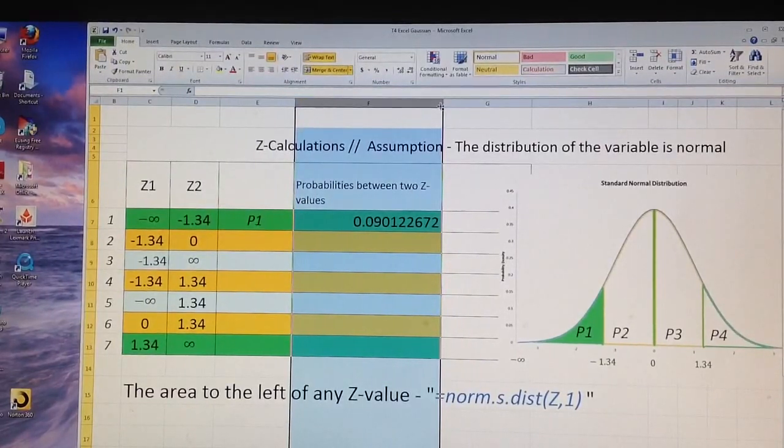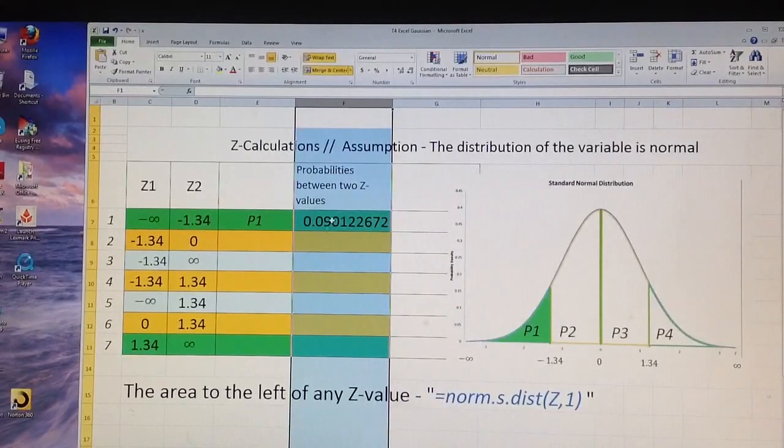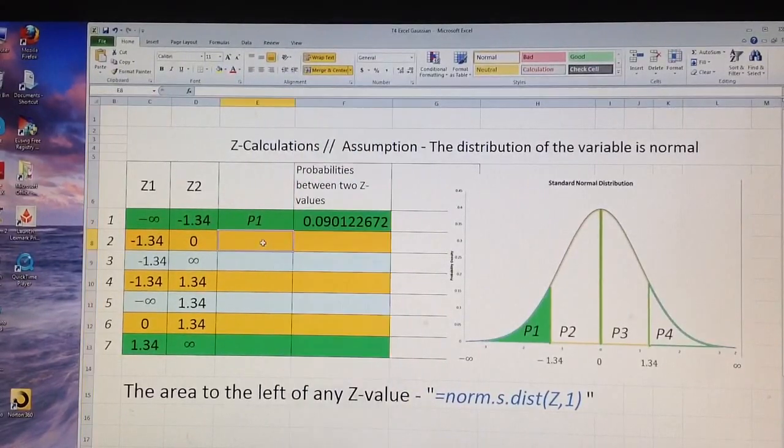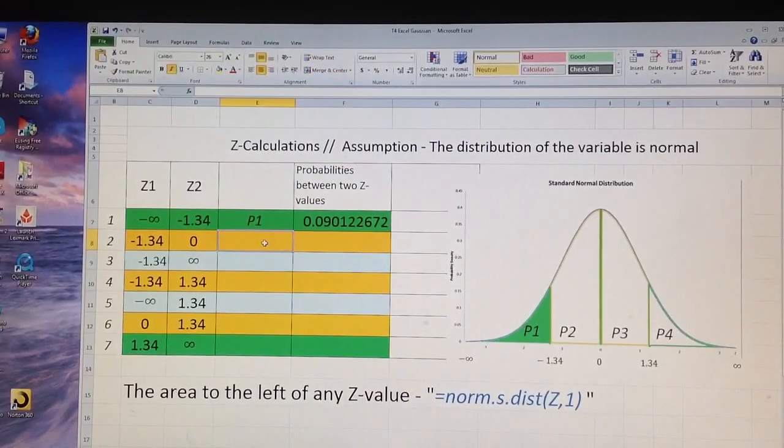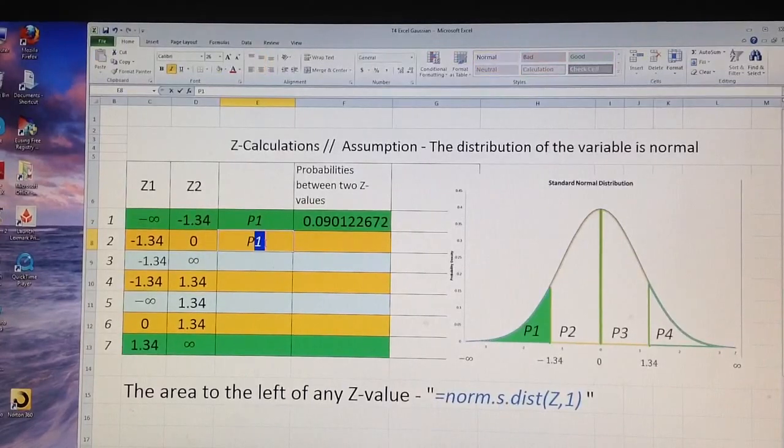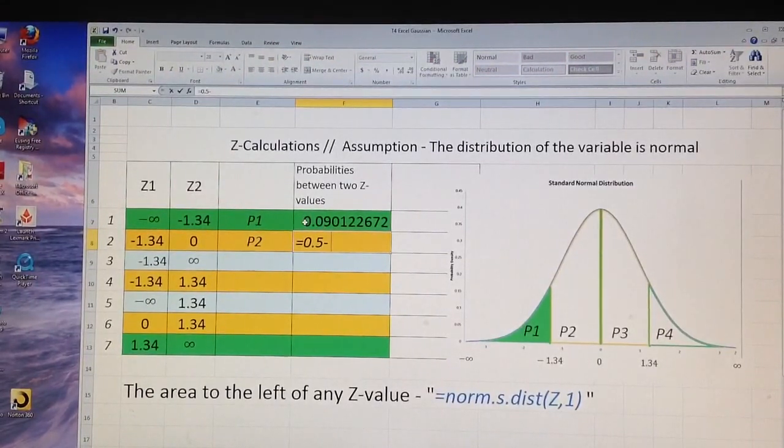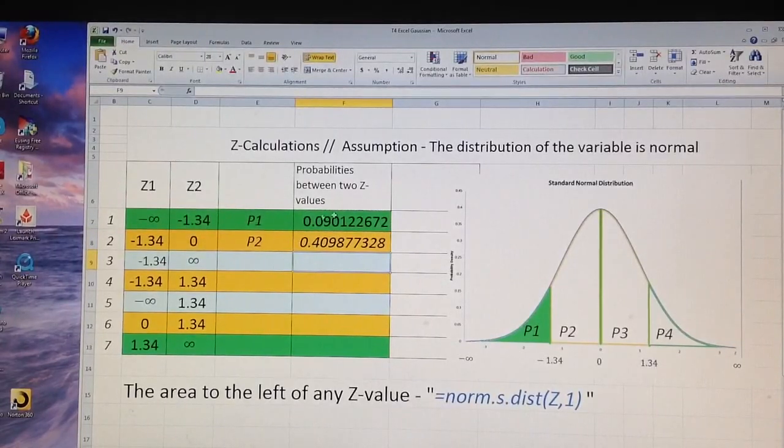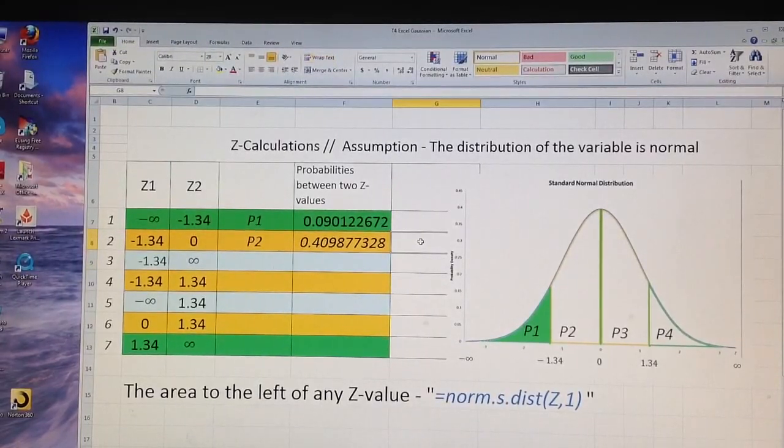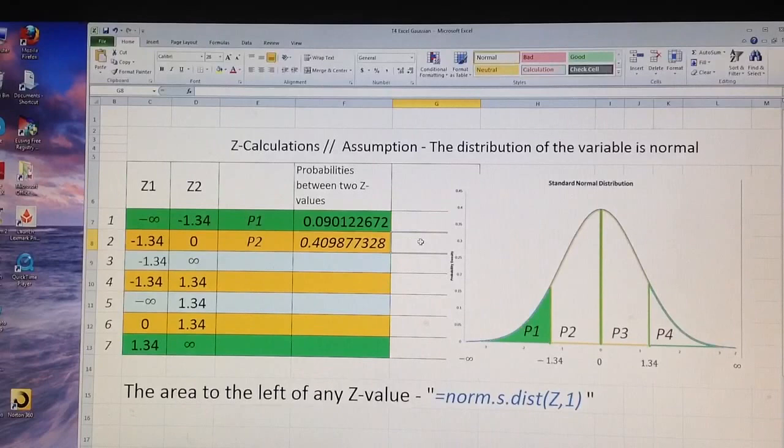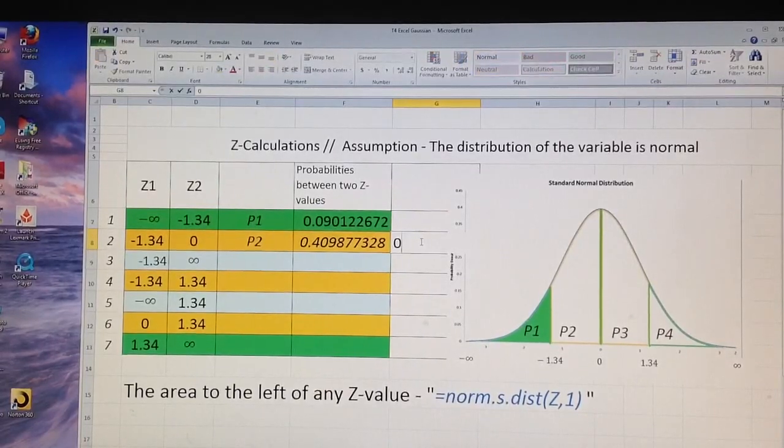This is all that I will use Excel for, because the rest from negative 1.34 to 0 is the area P2, and this area is actually equal to 0.5 minus P1, because we know that half of the values are to the left of the mean, so it is 0.5 minus P1.